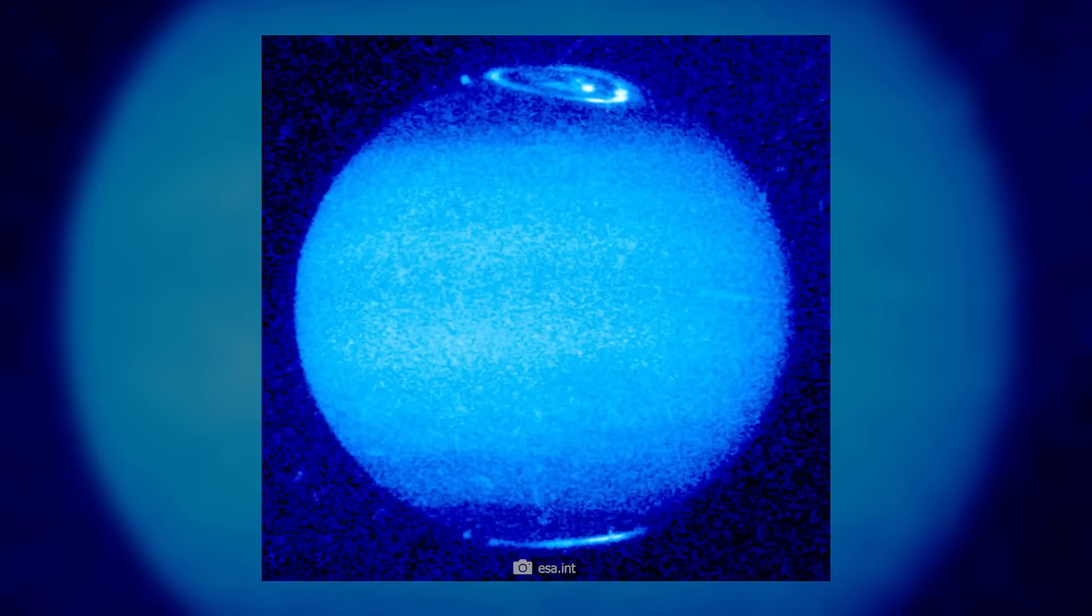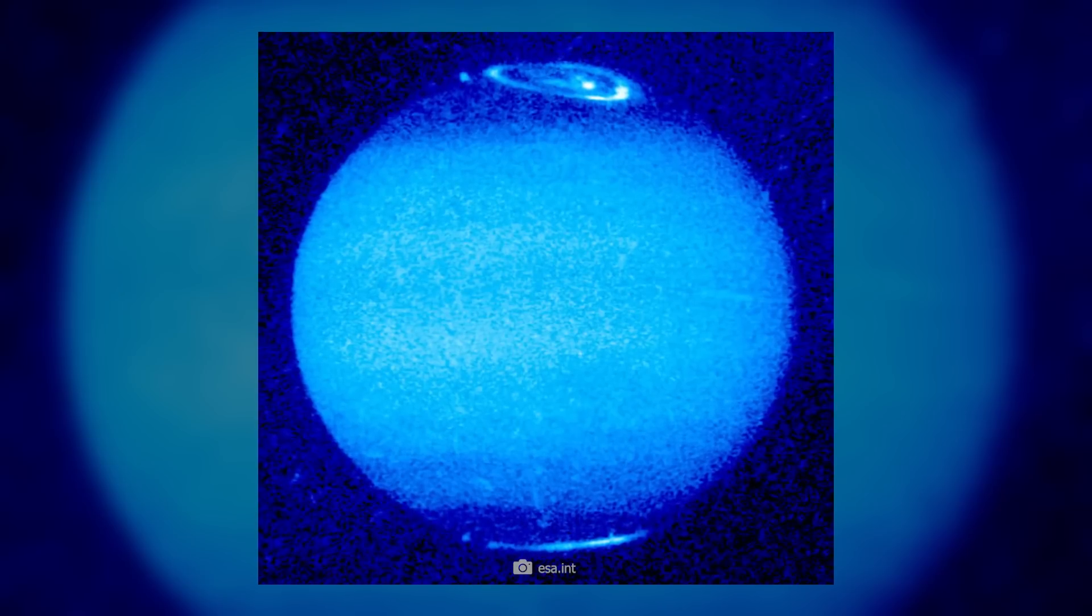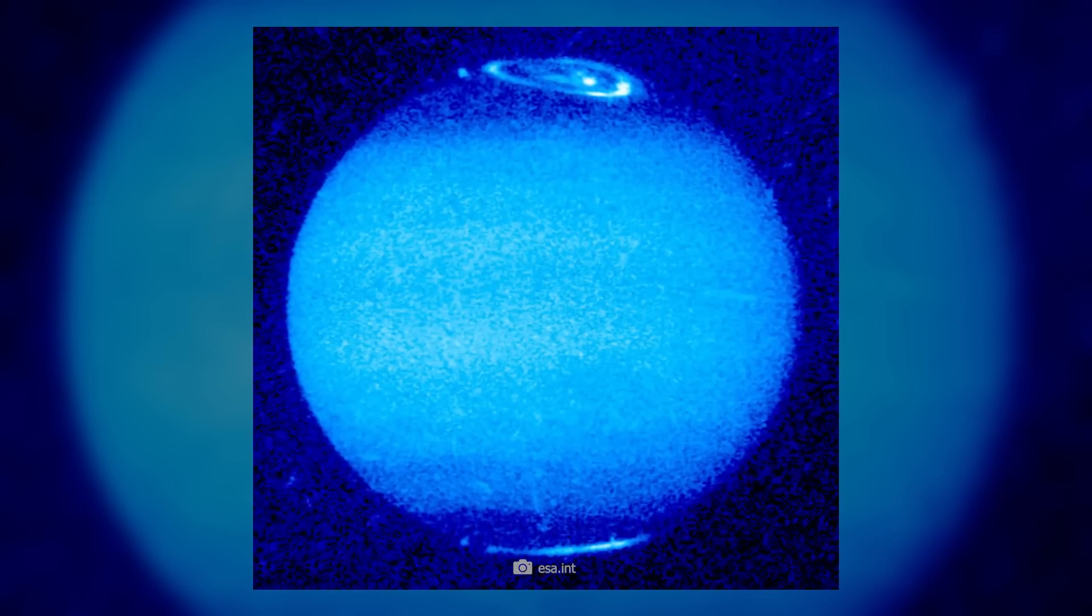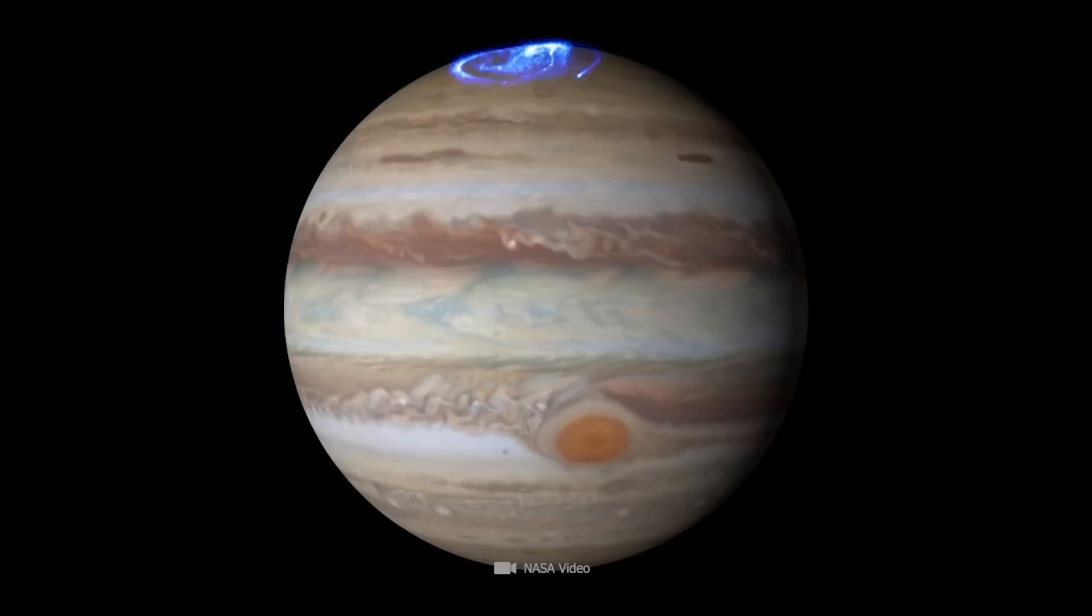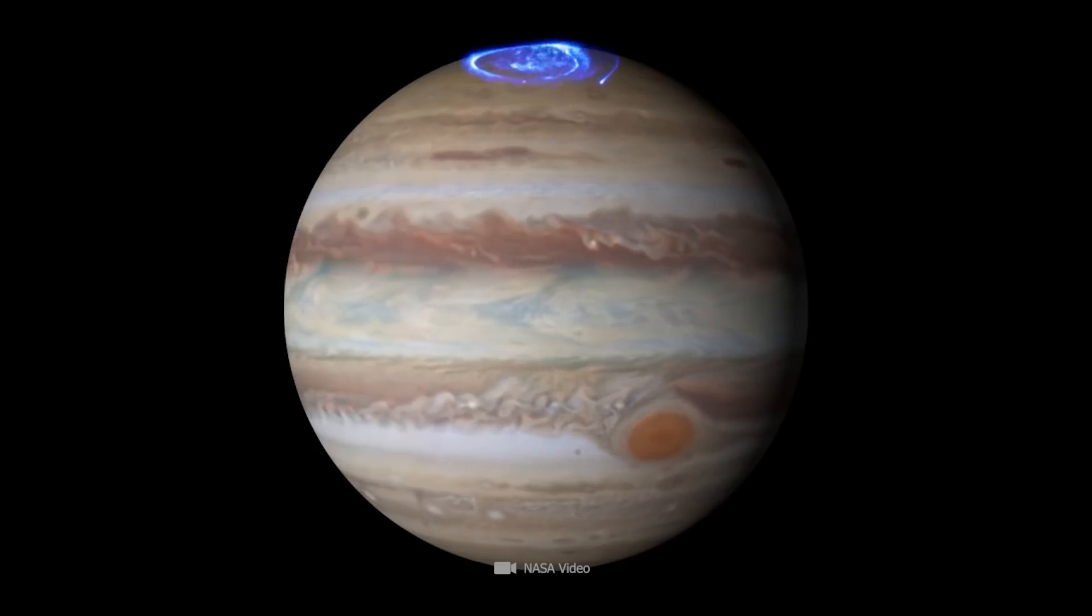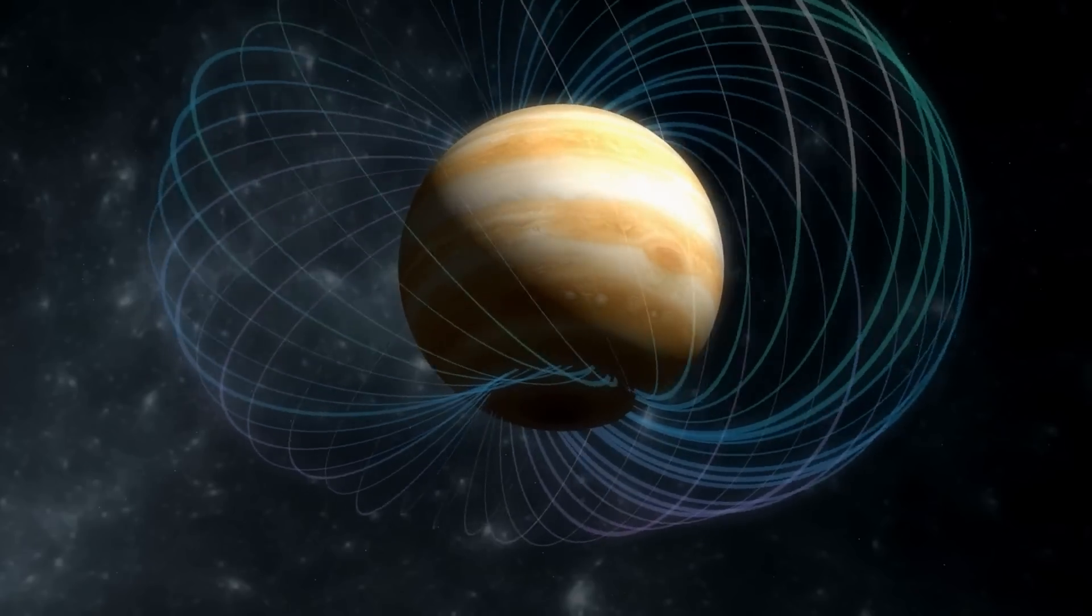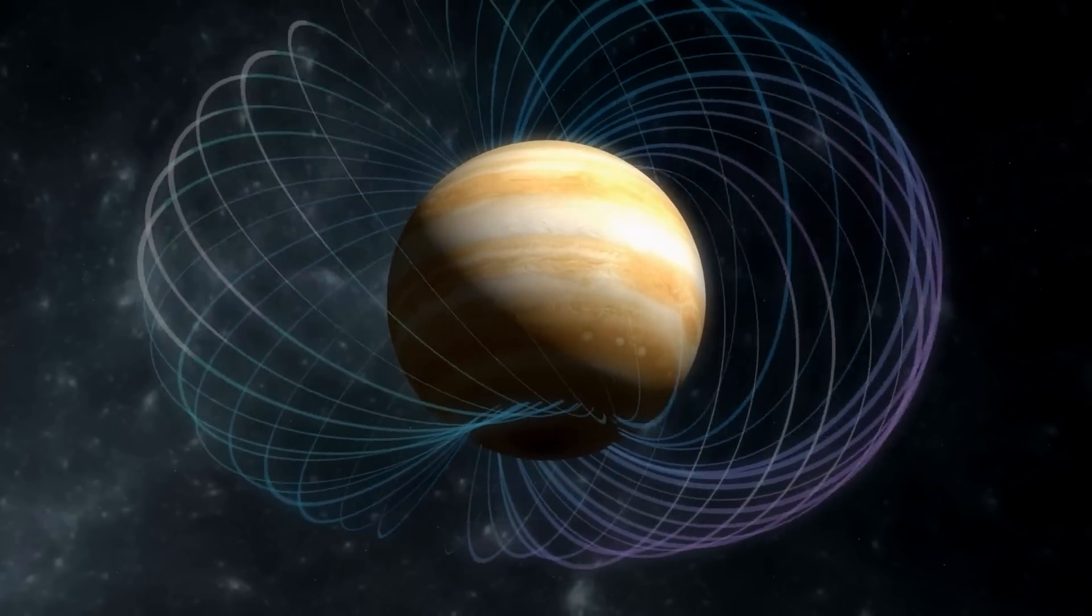In these images, the entire planet appears blue, because astronomers wanted to use special light filters to accurately depict the height and extent of the auroras. These observations are not only visually impressive, but also provide valuable scientific insights into Jupiter's unique magnetic field.